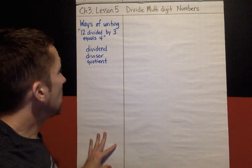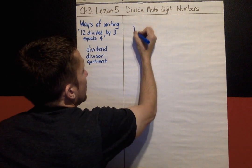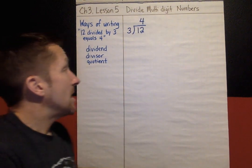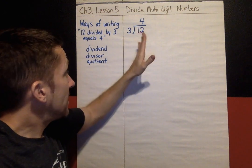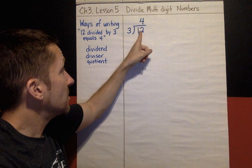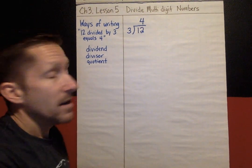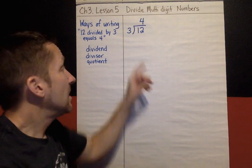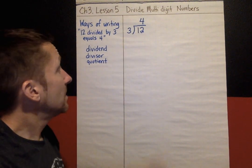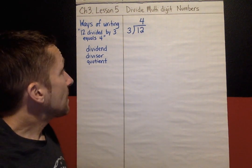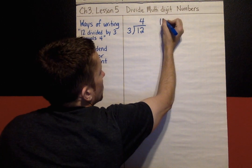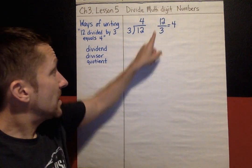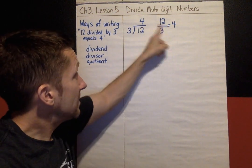The very first way that you could write 12 divided by 3 equals 4 is you could write it like this. 12 divided by 3 equals 4. That's the translation for that. The next way that you can write 12 divided by 3 is 4. So that line means divide.